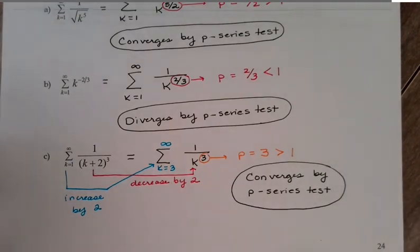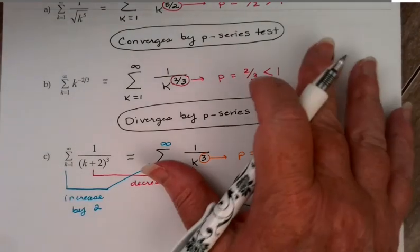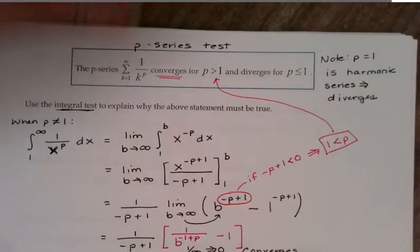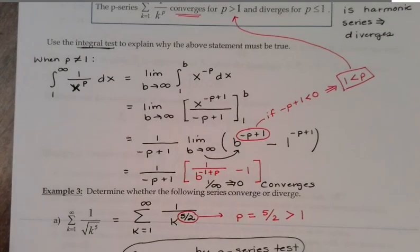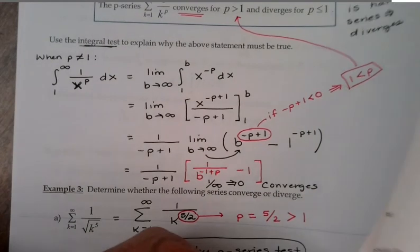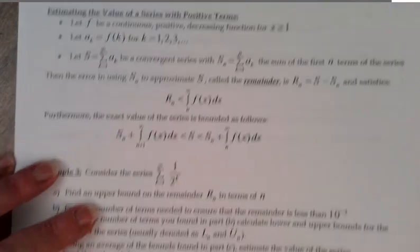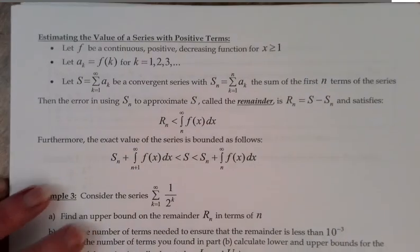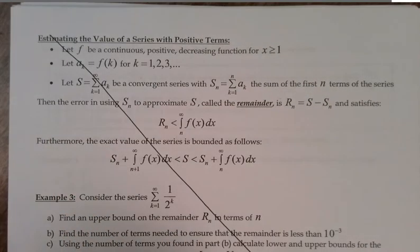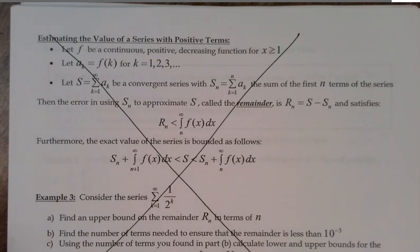That brings us to the end of what you need to know for section 8.4. There is one more page in your course pack on this section, but I am not holding you responsible for that. We are not going to do the estimating of the value — we're going to concentrate just on the converging and diverging. That's all you're going to be held responsible for in this course.